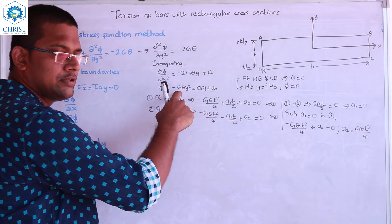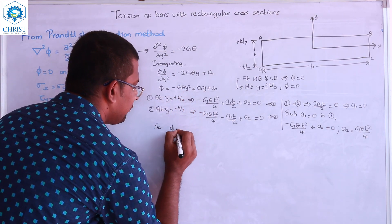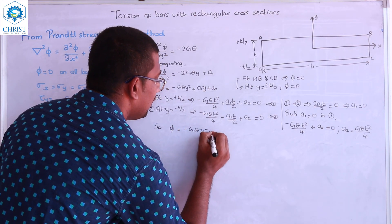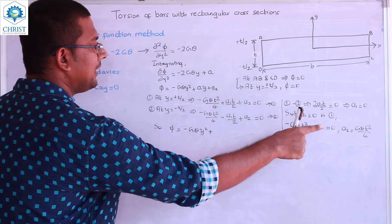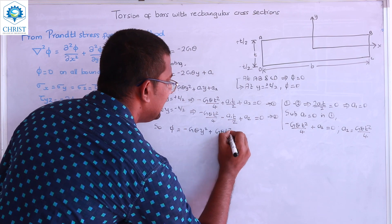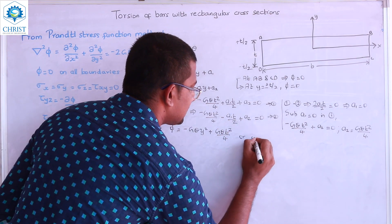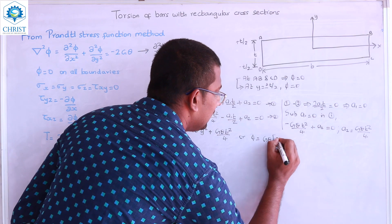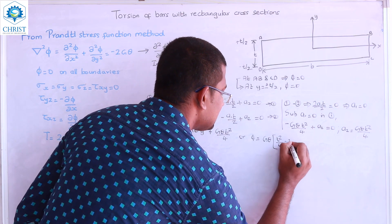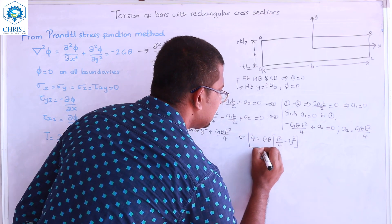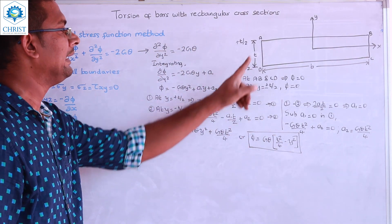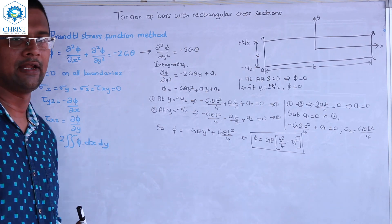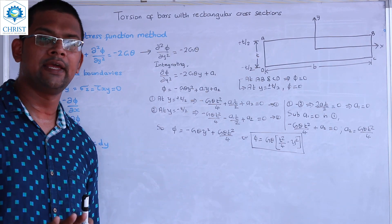Substituting A1 = 0 and A2 = Gθ·T²/4 back into the expression for φ, we get the final value of Prandtl's stress function for a thin rectangular section: φ = Gθ·(T²/4 − y²).